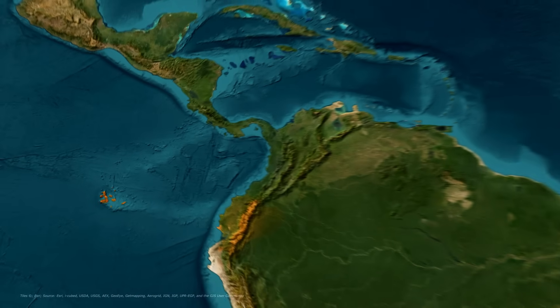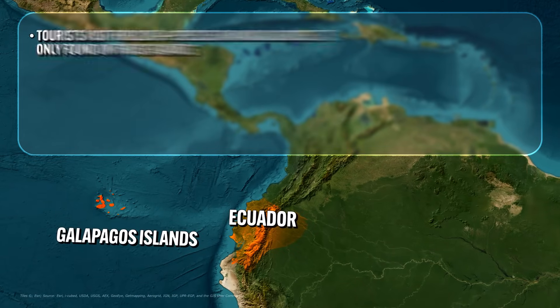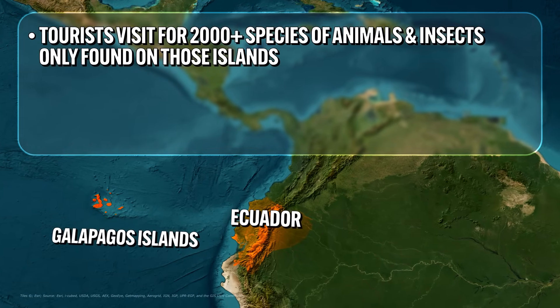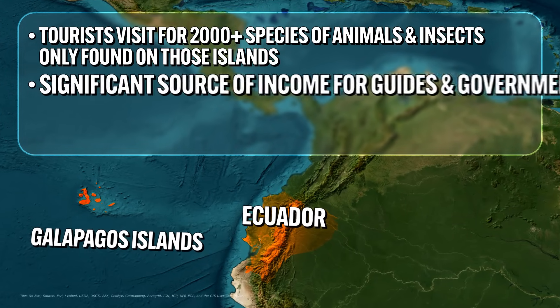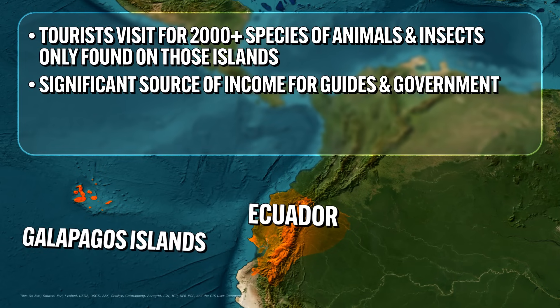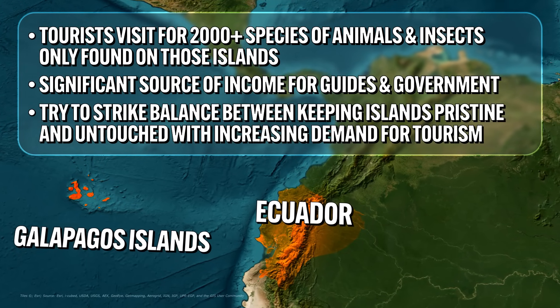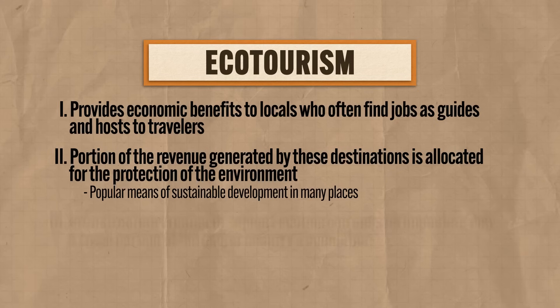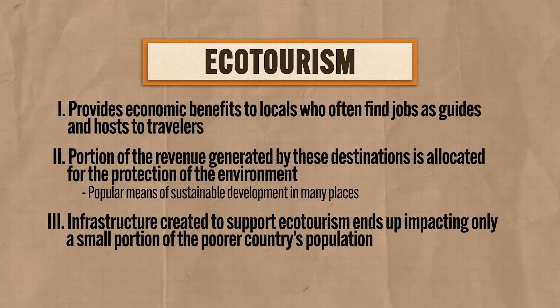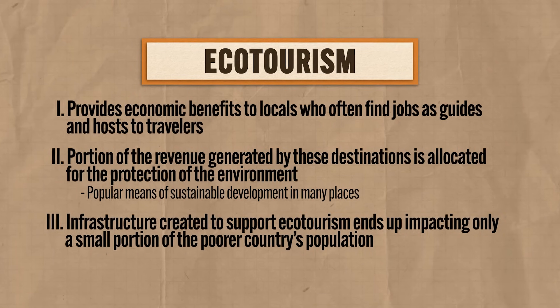A major ecotourism destination you've probably heard of is the Galapagos Islands. Tourists go there from all over the world because the islands are home to over 2,000 species of animals and insects that are only found on those islands. While it's a huge source of income for the guides who work there and the Ecuadorian government, they're always trying to strike the balance between keeping the lands pristine and untouched with the increasing demand for tourism. To further complicate the issue, much of the money invested into these kinds of ecotourism destinations ends up going right back into the pockets of the large tourism businesses and core countries, and the infrastructure created ends up impacting only a small portion of the poorer country's population. So, as with everything else in this course, it's complicated.